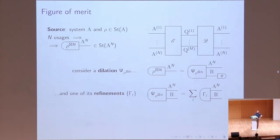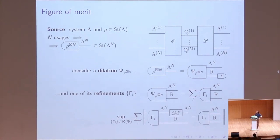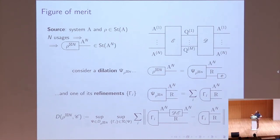We model the output of a source as a refinement of a possible dilation of the local signal. Therefore, the error is computed using the average error when we apply our compression scheme. Since we want to account for all possible ways the dilation is prepared, we take a supremum over all possible refinements, and since we want to account for all possible ways the N copies of A are correlated with a remote system, we also take a supremum over all possible dilations. This defines the figure of merit we use to generalize the entanglement fidelity.